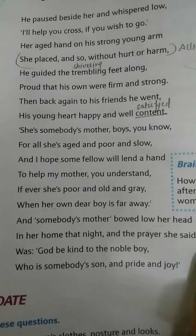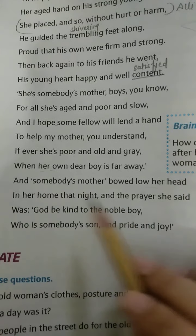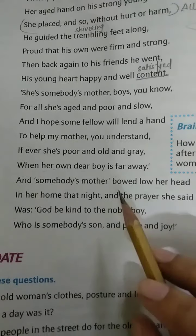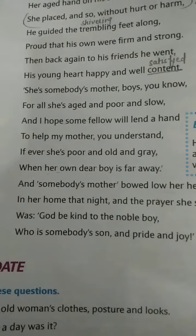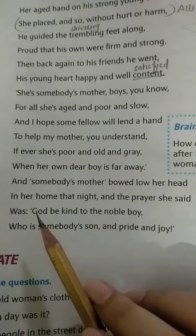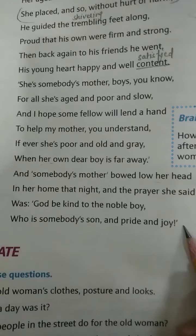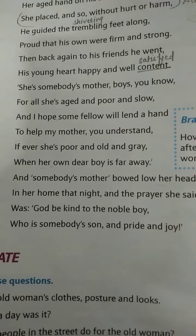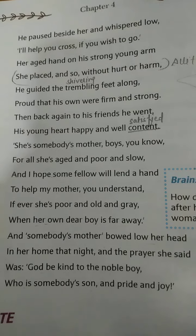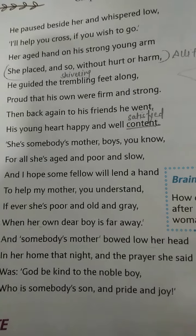And somebody's mother bowed low her head. That night, that old lady bowed her head in her home and prayed. She prayed for that boy who helped her on the street to cross the road. She prayed: 'God be kind to the noble boy, who is somebody's son and pride and joy.' That boy who helped her would be very kind, and he is also somebody's boy — so God must always be kind to that noble boy. The boy helped that old lady because he was thinking that some other person would help his mother when she is in need. And he received so many prayers and wishes from that old lady.